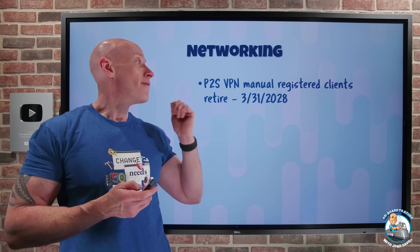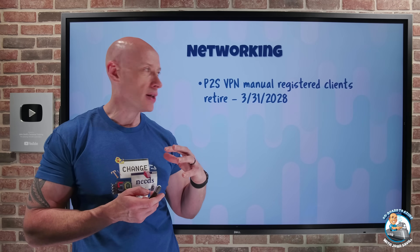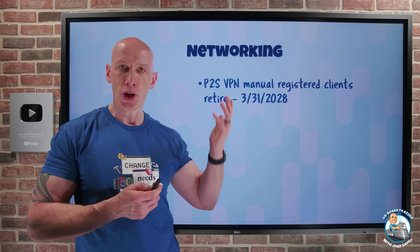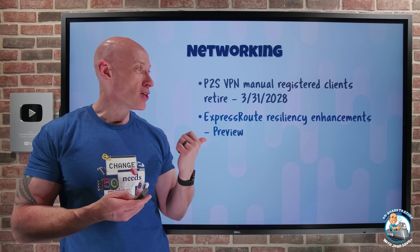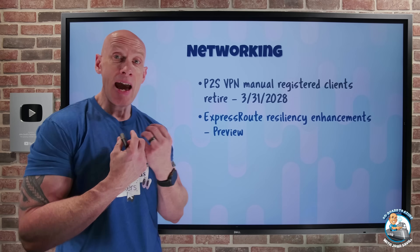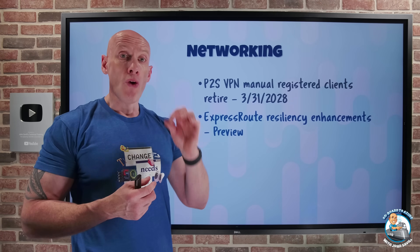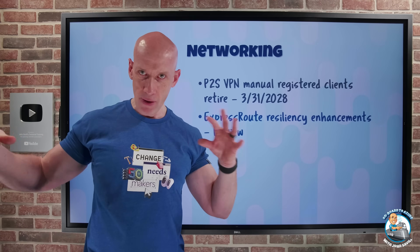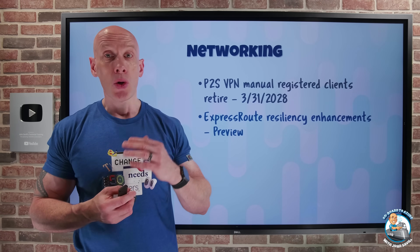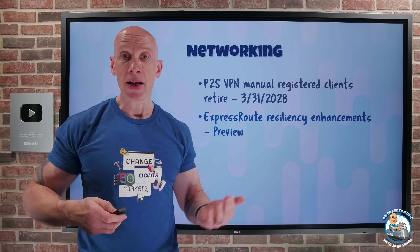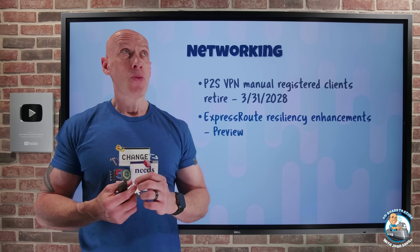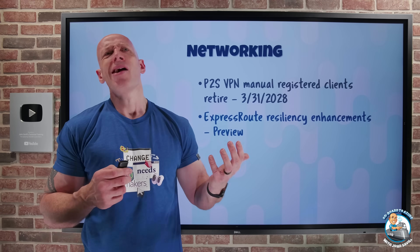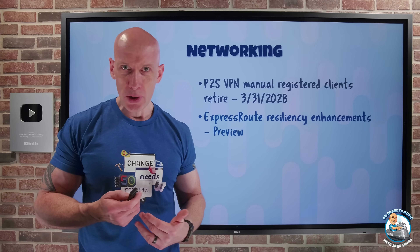On the networking side: point-to-site VPN manual registered clients using Entra authentication are being retired end of March 2028 — you need to move to the Microsoft-registered VPN client, so you've got three years to migrate. ExpressRoute has a whole bunch of resiliency enhancements in preview. The first lets you simulate a circuit failure for your virtual network gateway and VNet, so you can verify you've configured resiliency correctly across multiple connections to different circuits on different peering points. It also now has insights providing a nice view of your gateway, showing available routes, and giving you a resiliency score percentage so you can understand how good your ExpressRoute resiliency is and what to improve.